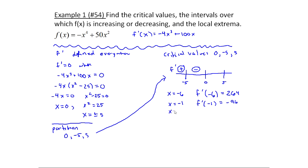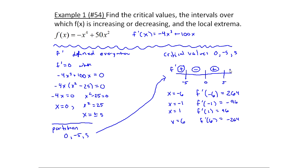Between zero and five, picking x equals positive one: f prime of positive one equals positive 96, so this interval is positive. Finally, f prime of six equals negative 264. Notice I didn't take for granted the symmetric behavior — that's not going to happen with every function, so I don't want to get in the habit of assuming it will.